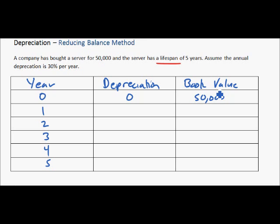In year one, we take 30% of $50,000, which is $15,000. So this asset depreciated $15,000 in year one, which gives us a new book value of $35,000. If we create a balance sheet at the end of year one, the value of this asset would show $35,000 in our fixed assets.